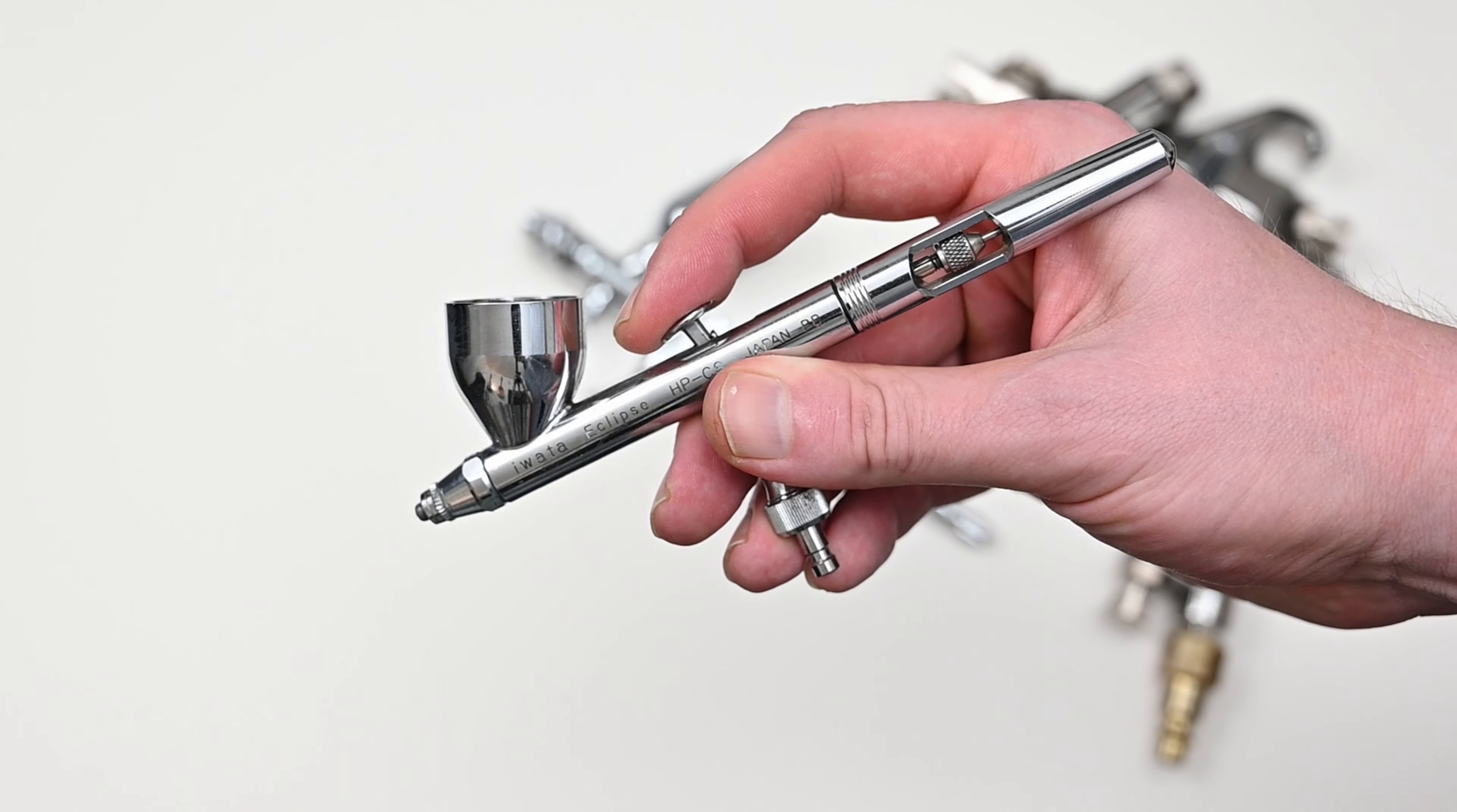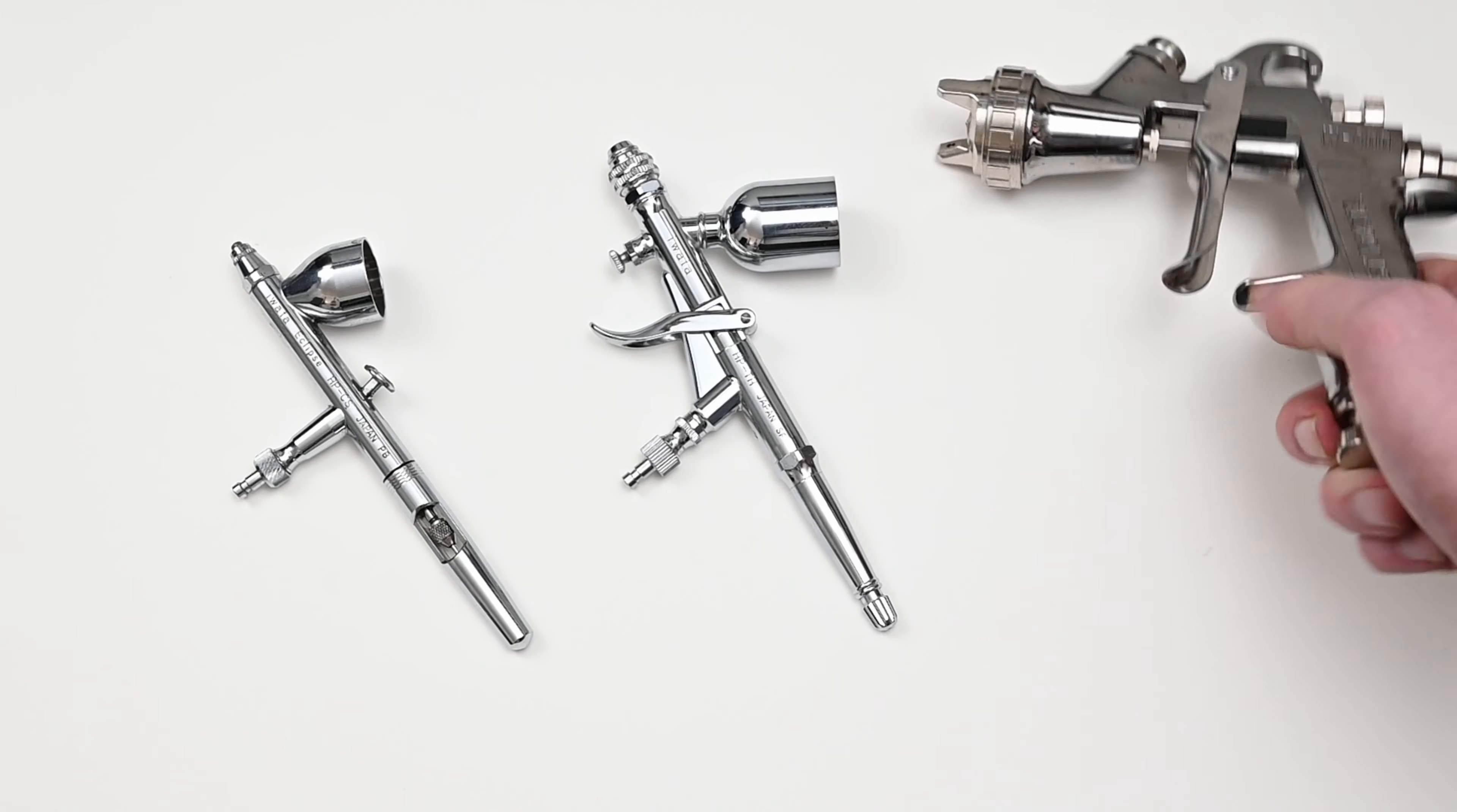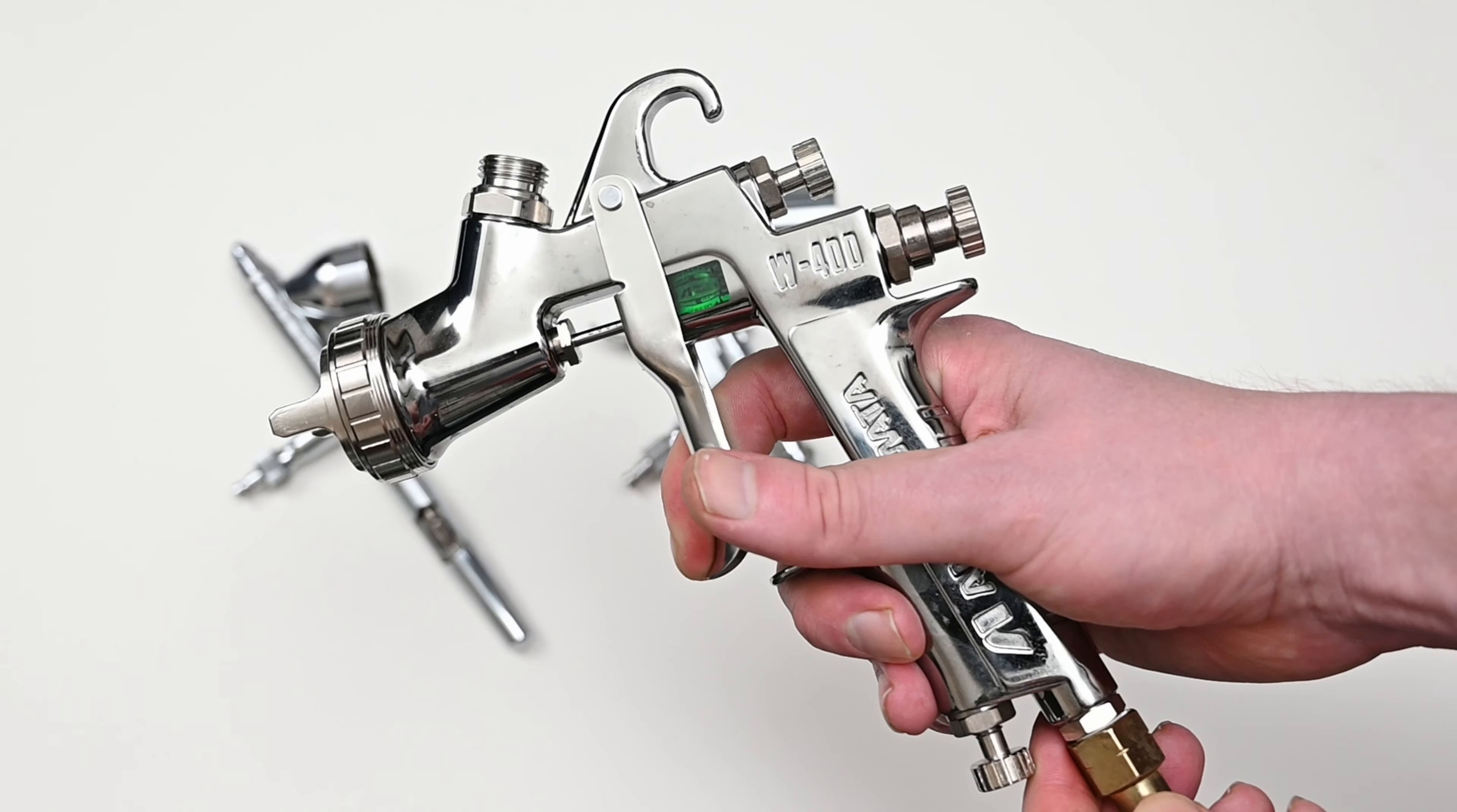It's equipped with a 0.35 millimeter nozzle and you can spray very thin lines down to about a quarter of a millimeter all the way up to larger spray patterns of about an inch to an inch and a half.